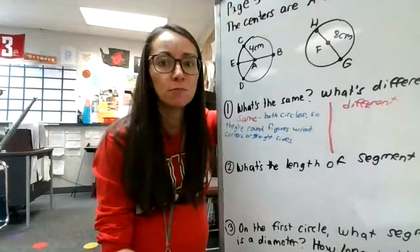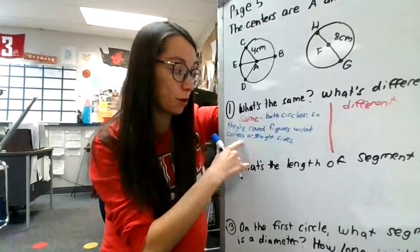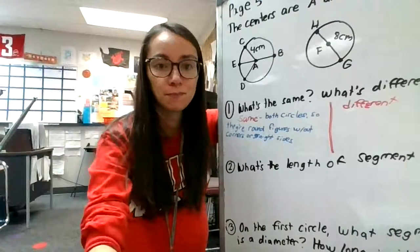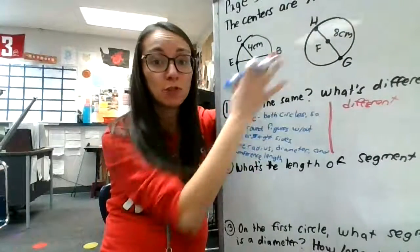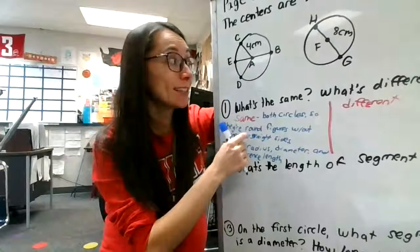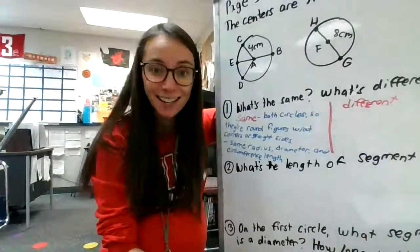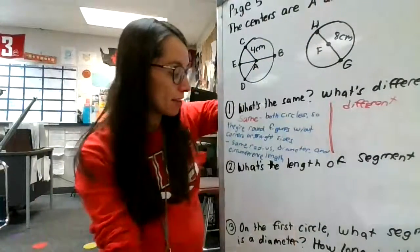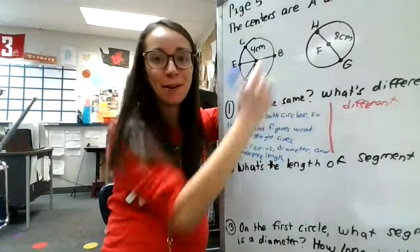Here's the first thing I wrote. Well, they're both circles. So they're round figures without corners or straight sides. That's what a circle is. Since the circles are the same in this particular example, we should also note that they have the same radius length. They'd have the same diameter length and the same circumference length.